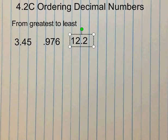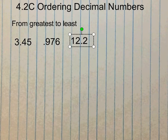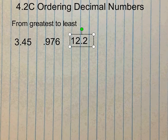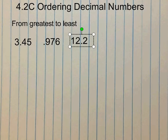And now we're going to start talking about ordering decimal numbers. When ordering decimal numbers, it's just like ordering whole numbers. It's good to put them on a place value chart.